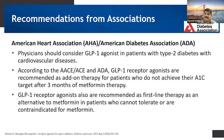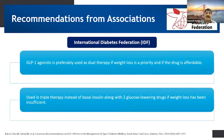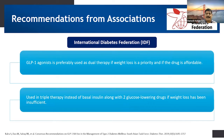GLP-1 receptor agonists are also recommended as a first-line therapy as an alternative to metformin for patients who cannot tolerate or are contraindicated for metformin. The International Diabetes Federation recommends GLP-1 agonists as the preferred choice as dual therapy when weight loss is a priority and affordability is important. GLP-1 agonists are also used in triple therapy instead of basal insulin along with two glucose-lowering drugs if weight loss has been insufficient.